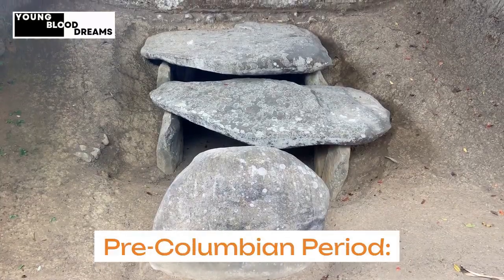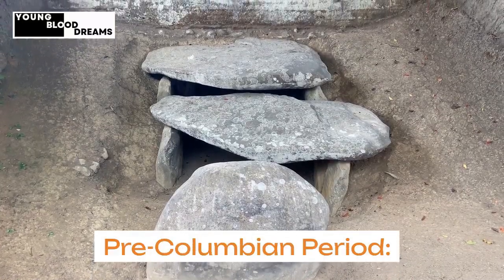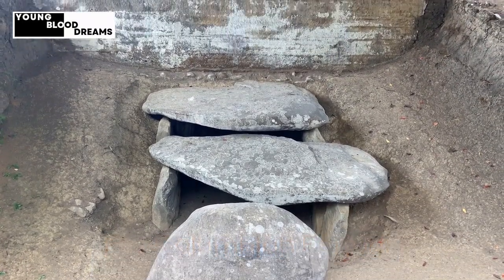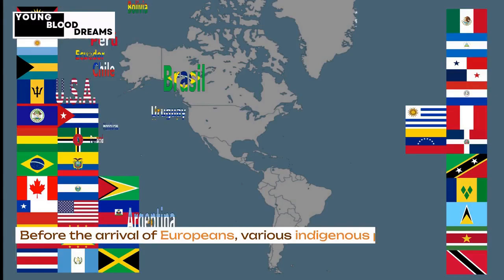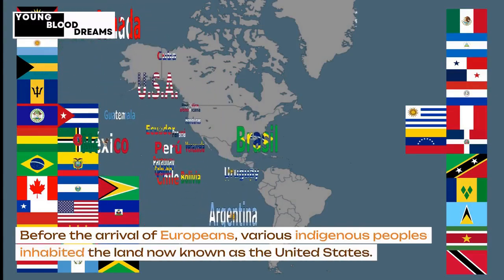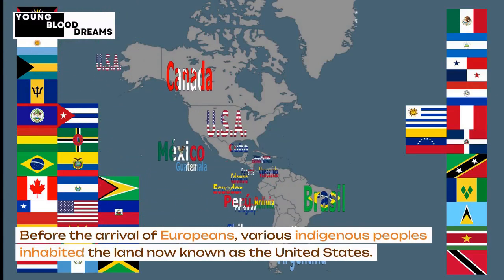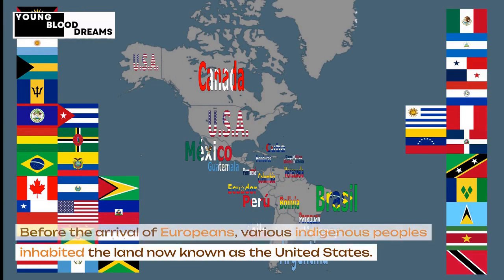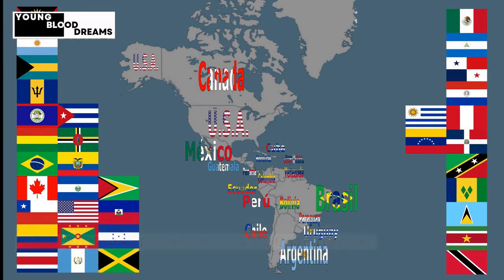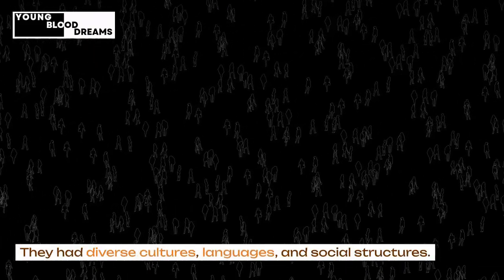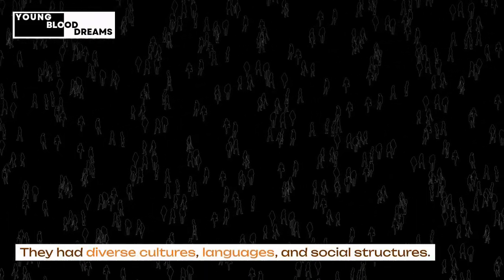Pre-Columbian Period. Before the arrival of Europeans, various indigenous peoples inhabited the land now known as the United States. They had diverse cultures, languages, and social structures.